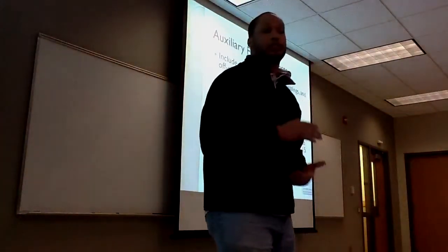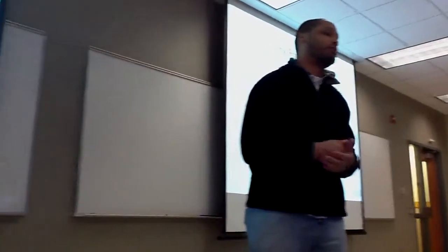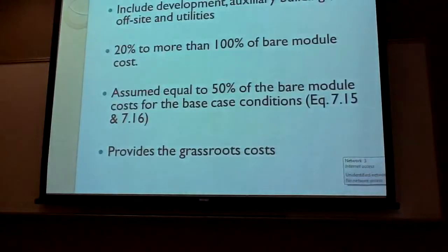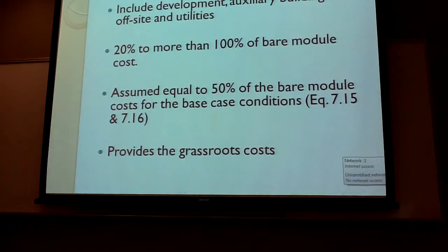The auxiliary facility costs will include new developments, auxiliary buildings, on- and off-site buildings, and new utilities being added to your facility. According to the book, 20% to more than 100% of your bare module costs are used for these auxiliary facility costs, but it is assumed to be equal to just 50% of the bare module costs. You would add basically 50% of that cost to the bare module costs using base conditions, and that would give you your grassroots costs.